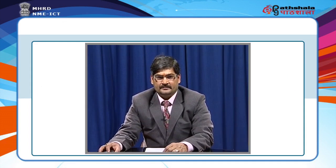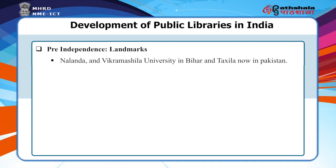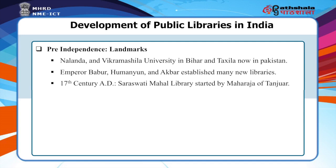Development of public libraries in India. We need to divide the developmental period in two phases: pre-independence and post-independence. In the pre-independence period, many libraries existed but were not public libraries in the real sense. For example, Nalanda, Vikramshila and Taxila Universities had wonderful libraries. In the Mughal period, Emperor Babur, Humayun and Akbar also established many libraries. The Saraswati Mahal library, started in the 17th century AD by the Maharaja of Tanjore, is another early example, but again was not a pure public library.